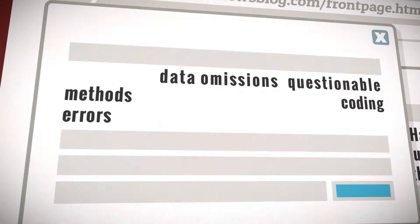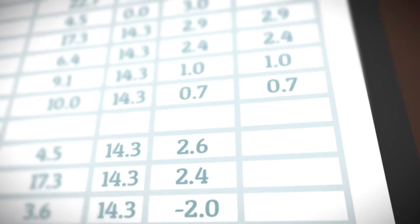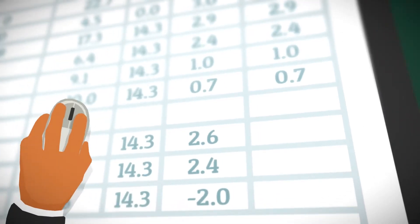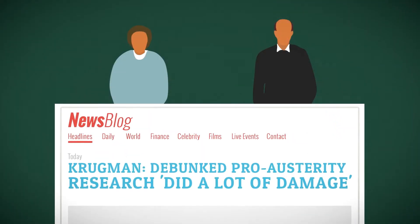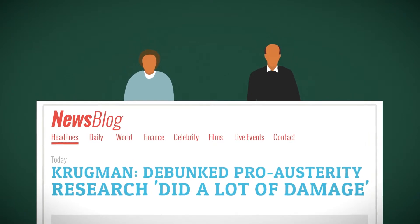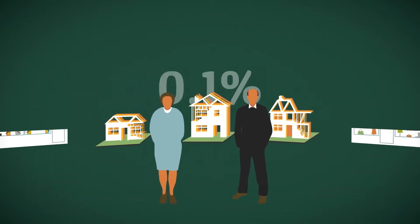When the maths was done correctly, it showed high-debt countries grew by 2.2% per annum. Reinhardt and Rogoff had claimed their economies contracted by 0.1%.